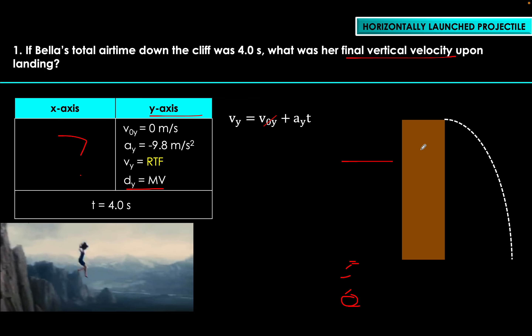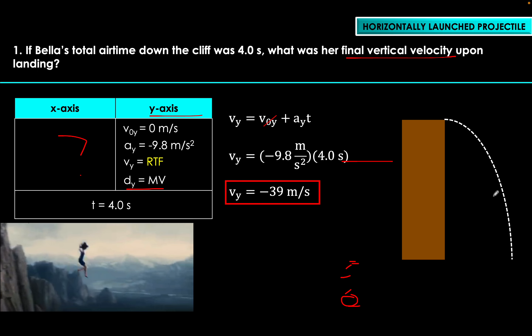We pick this equation because it does not contain the missing variable d_sub_y. We can cancel v₀y or initial vertical velocity because it's zero, so we are left with acceleration along y times time: negative 9.8 meters per second squared times 4.0 seconds, which gives us negative 39 meters per second. The negative sign indicates this velocity is directed downward.